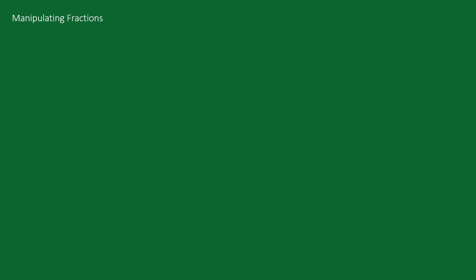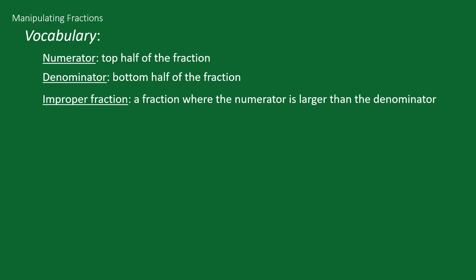Let's start off by defining some vocabulary. You have probably heard these terms thrown around but you might not know or remember what they mean. The numerator is the top half of the fraction. The denominator is the bottom half of the fraction. An improper fraction is a fraction where the numerator is larger than the denominator. A mixed number is a whole number plus a proper fraction.